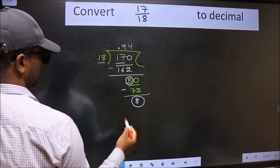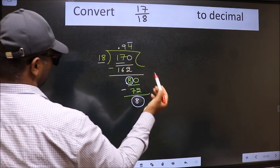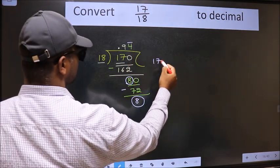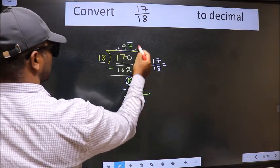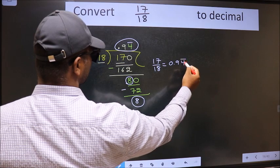Earlier also we got 8. That means we get bar on this number. Therefore decimal of 17 by 18 is this one: 0.94 with bar on this number. This is our answer.